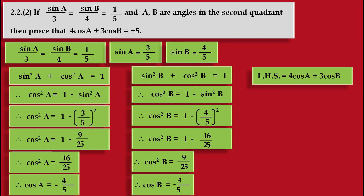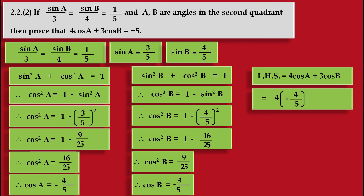Now, by using these trigonometric values, we have to prove that 4 cos A plus 3 cos B is equal to minus 5. Let us consider the left hand side equal to 4 cos A plus 3 cos B. Substituting the values of cos A and cos B, we get: 4 into (minus 4 upon 5) plus 3 into (minus 3 upon 5).